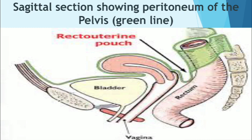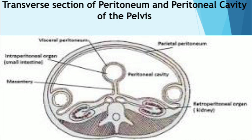In both male and female, the inferior third of the rectum is below the inferior limits of the peritoneum — it is subperitoneal. The middle third of the rectum is covered by peritoneum on its anterior surface only. The superior third is covered on both its anterior and lateral surfaces. The rectosigmoid junction near the pelvic brim is intraperitoneal. Here is an illustration of a transverse section of the peritoneum of the pelvis, showing the parietal peritoneum, the visceral peritoneum close to the organs, the peritoneal cavity, and the mesentery.